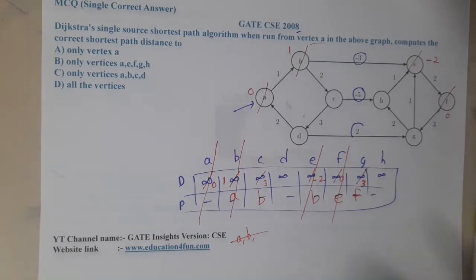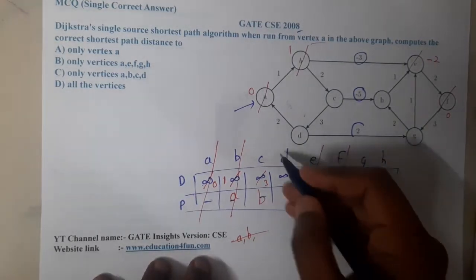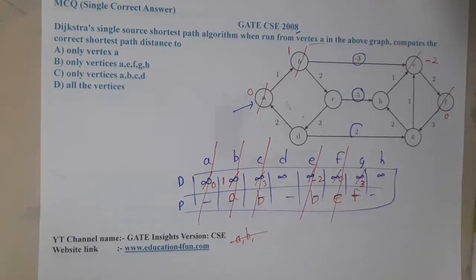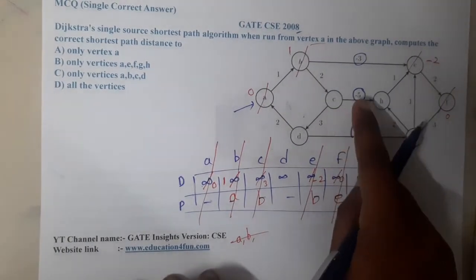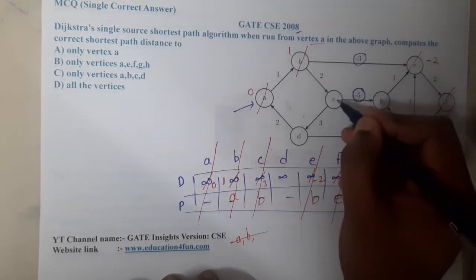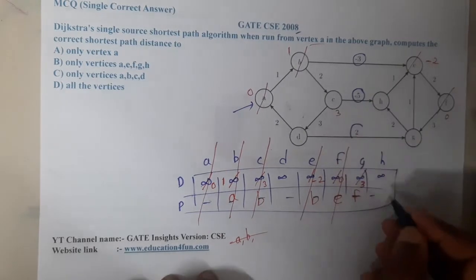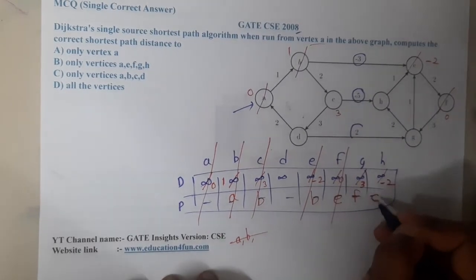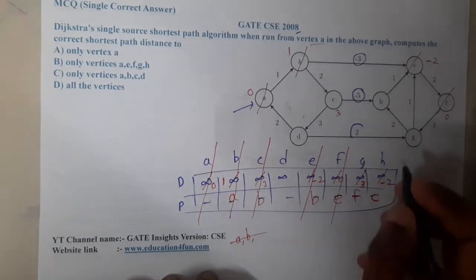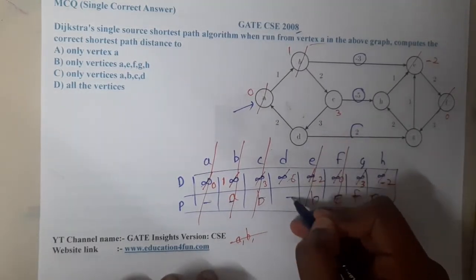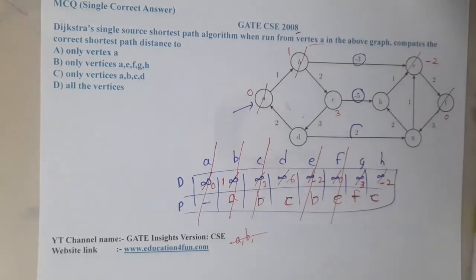I will be taking c. From c with the cost of minus 5 I can go to h, so with the cost of minus 5 - at c what is the cost? It is 3, so 3 minus 5 is minus 2. So with minus 2 I can go to h via c. So this is done. From c I can go to d also, that cost will be 6 and with the help of c.